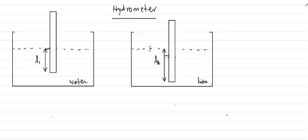In this video we will look at the hydrometer and solve a couple of questions after we understand the theory. A hydrometer is used to measure the density of a liquid. We take the hydrometer of total length L and place it in the liquid.